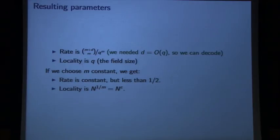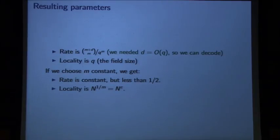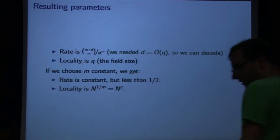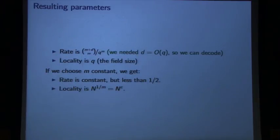Reed-Muller codes give lots of parameters to play with. The rate is the number of degree-d polynomials in m variables divided by the code word length q^m. The locality is q, because lines have q points. You can get codes with constant rate up to rate one-half, and the locality will be n^{1/m}, since q = n^{1/m}. By changing m, you can get n^epsilon for any epsilon. This is the classical construction that's the benchmark.